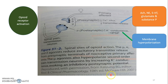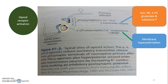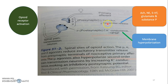At the pre-synaptic level, opioid receptor activation can close the voltage-gated calcium channel, which inhibits transmitter release — including acetylcholine, norepinephrine, serotonin, glutamate, and substance P. This will eventually lead to a reduction in pain.